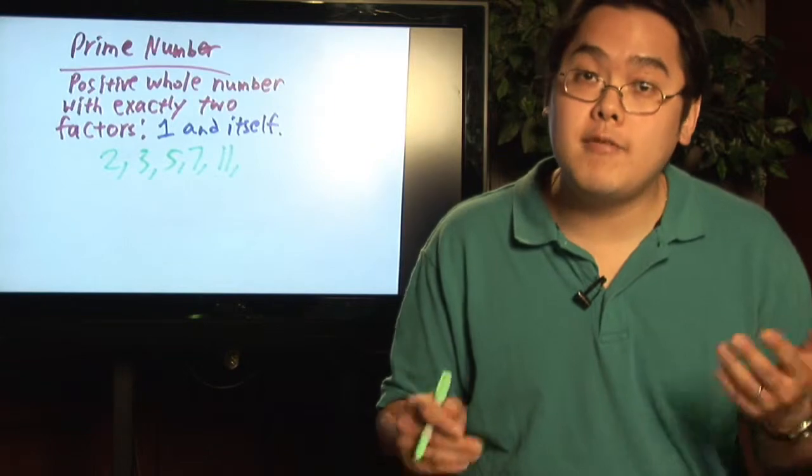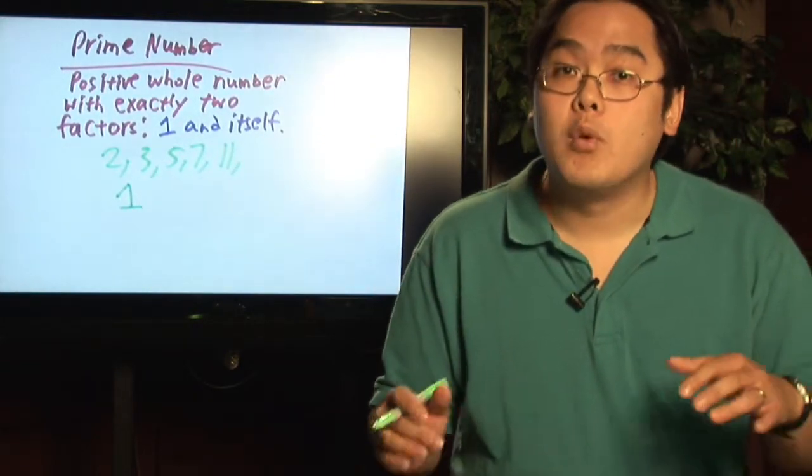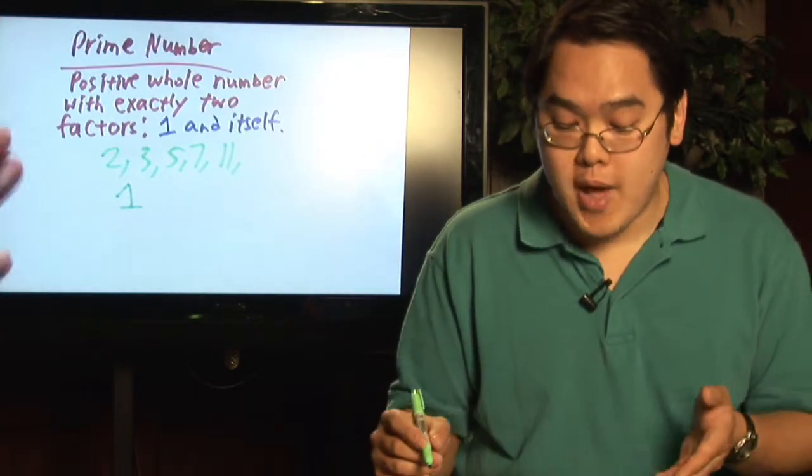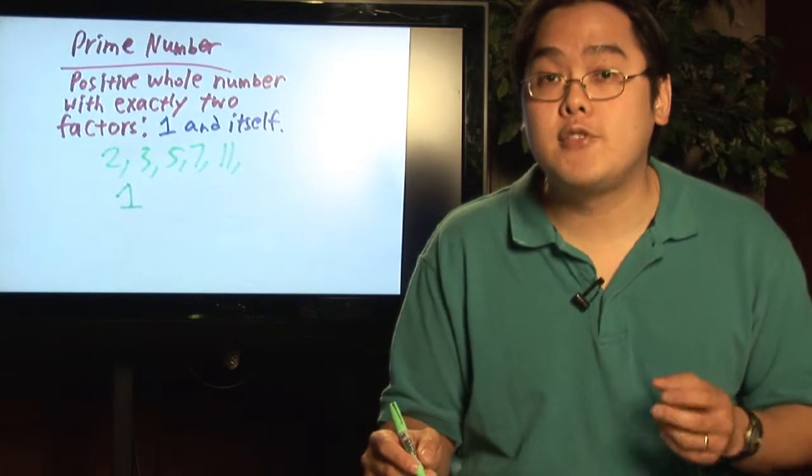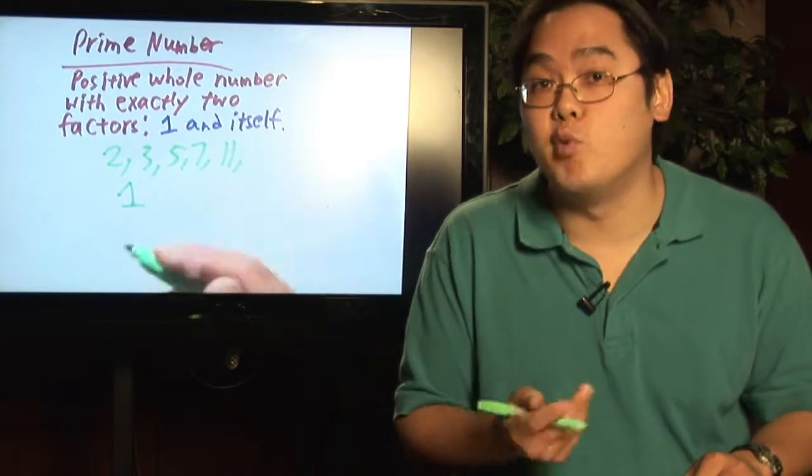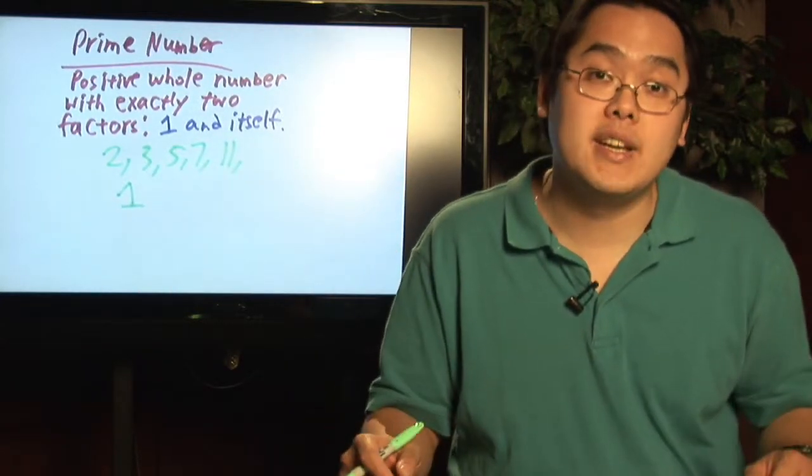Now, the one number that folks sometimes mistake for a prime number is the number one. One is actually not a prime number because if you go back to the definition, to be a prime number, you have to have two factors: the number one and something else. Because the factors of one really is just one—it's only one factor, not two. So the number one is not prime.